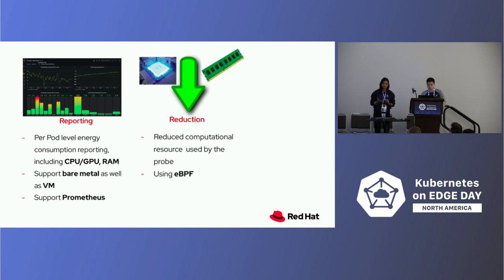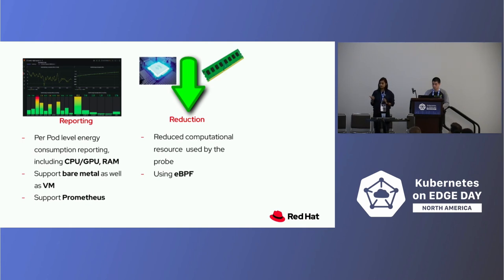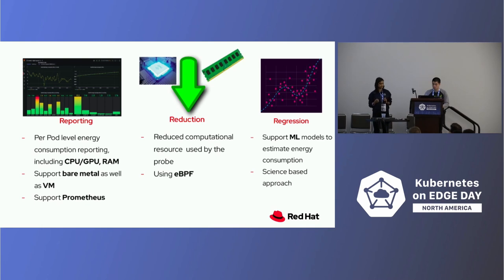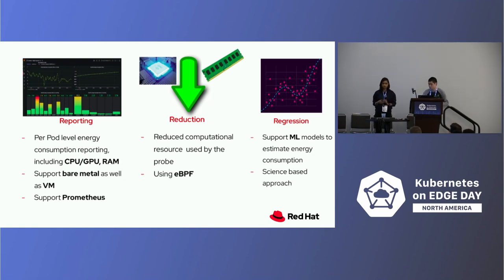Since Kepler is supposed to measure energy consumption, it's very important that its own energy footprint is very low. We used eBPF to probe software and kernel counters to get these readings. And Kepler uses machine learning models in cases where you don't have access to existing power monitors on the cluster — whenever there's no power meter available, Kepler uses its own ML models to get the readings.